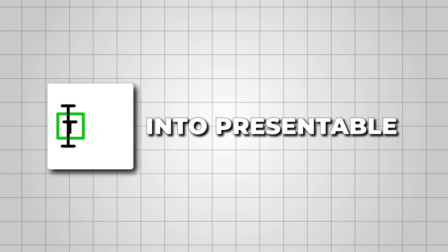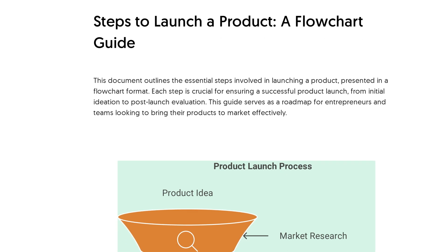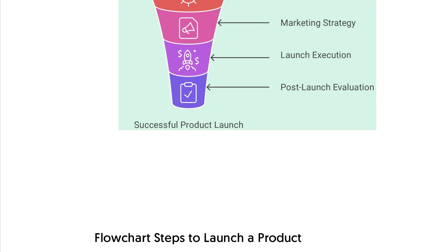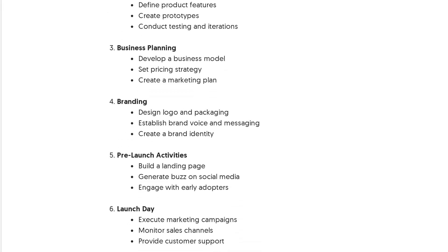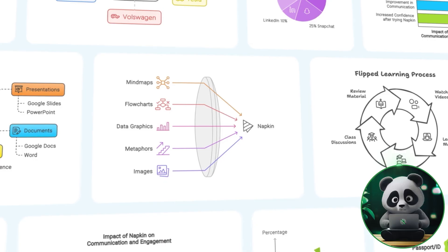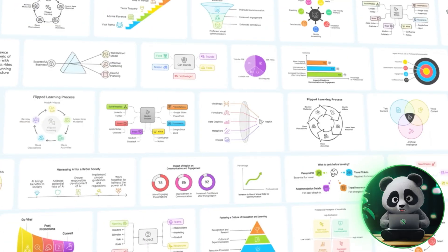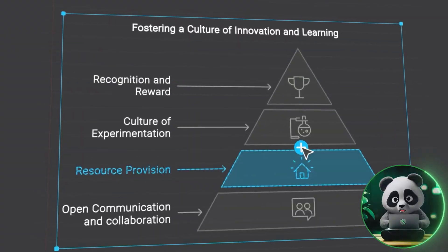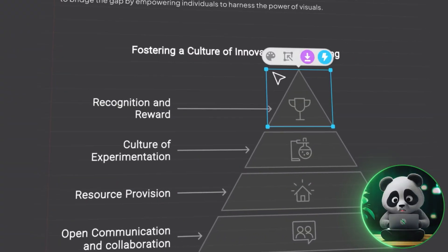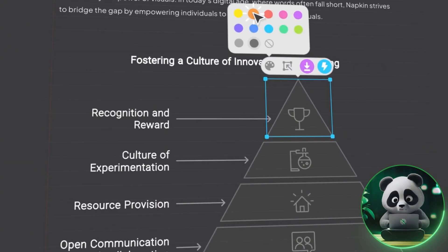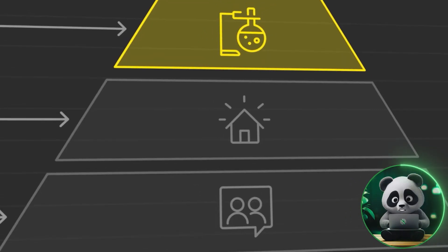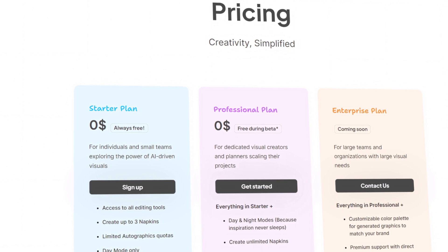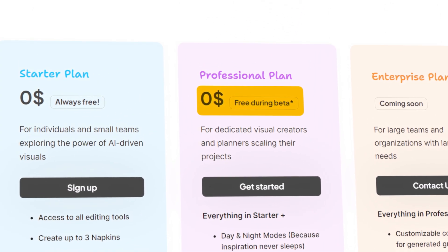See how I transformed my text into presentable notes with diagrams in just a few clicks. This is Napkin AI, which makes it incredibly easy to create stunning presentations for your meetings or blogs. And the best part, the tool is currently in beta, so it's completely free to use.